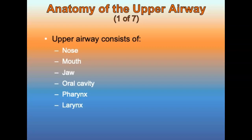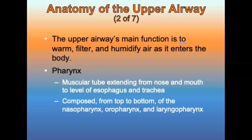The upper airway consists of all anatomic airway structures above the vocal cords, including the nose, the mouth, the jaw, oral cavity, the pharynx, and the larynx. The main function of the upper airway is to warm, filter, and humidify the air as it enters the body.